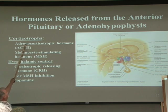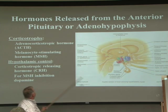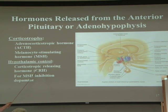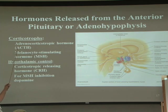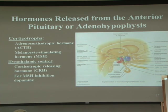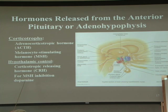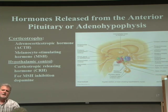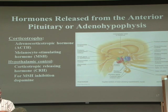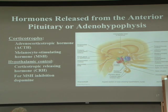Corticotrophs are another anterior pituitary cell type, controlled by CRH (corticotropin-releasing hormone). When CRH increases, corticotroph activity increases, raising production of ACTH (adrenal corticotropic hormone). Corticotrophs also produce melanocyte-stimulating hormone (MSH). Normally dopamine inhibits MSH. In some diseases, the body begins producing large amounts of MSH, causing hyperpigmentation — darkening of the skin even without sun exposure — which can be used clinically as a diagnostic indicator.